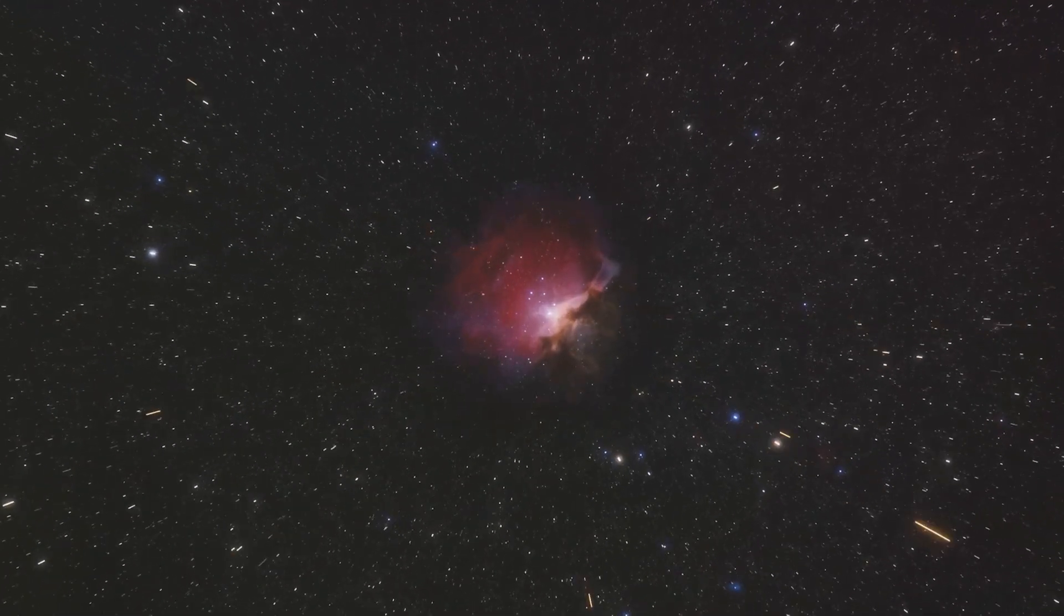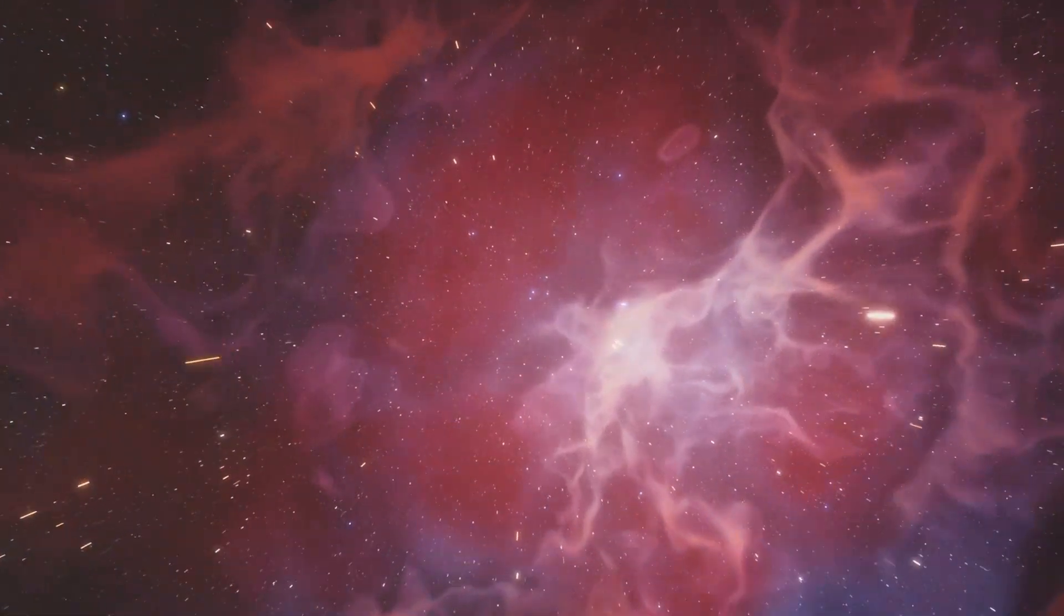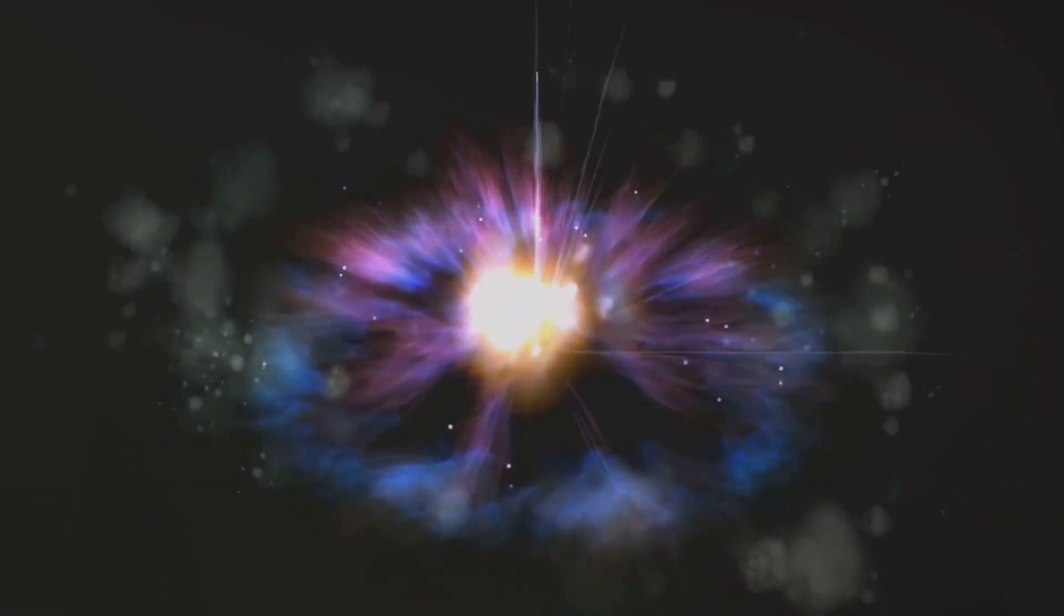Our journey also brought us face-to-face with Eta Carinae, one of the most dangerous stars in the universe. This luminous blue variable star, located in the Carina constellation, has been intriguing astronomers for centuries.